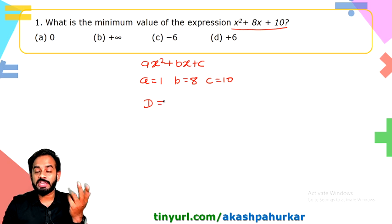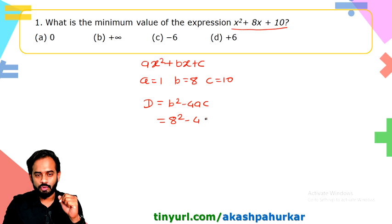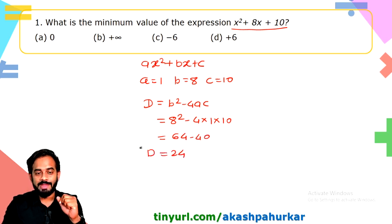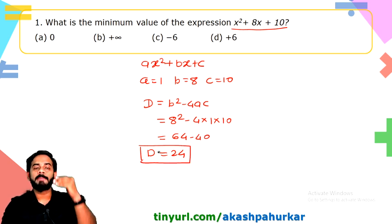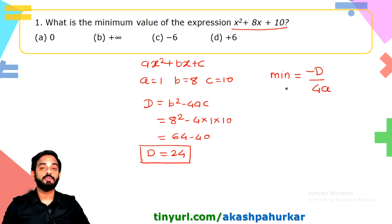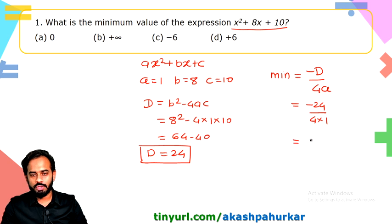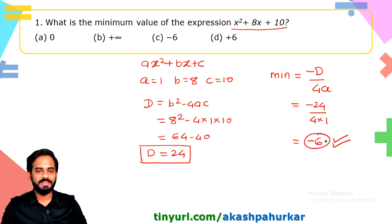Now, the discriminant of any quadratic equation is b² − 4ac. Here, b² is 8² = 64, minus 4 × 1 × 10 = 40, so D = 24. The formula for minimum value of a quadratic is −D/4a, which gives −24 / (4 × 1) = −6. So the minimum value is −6.